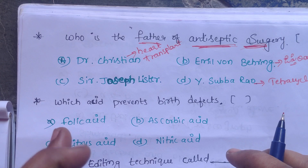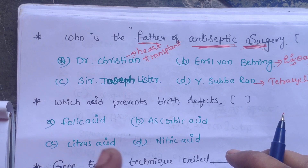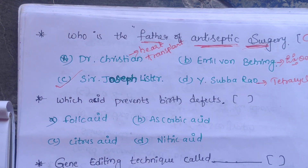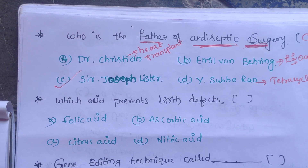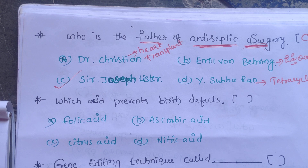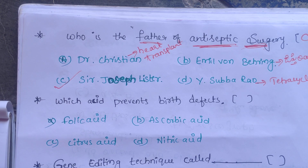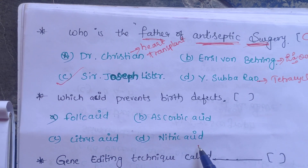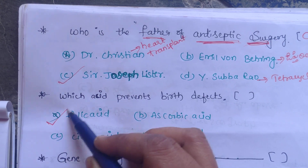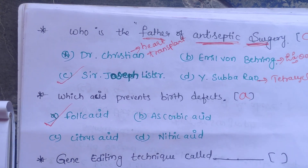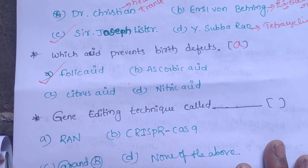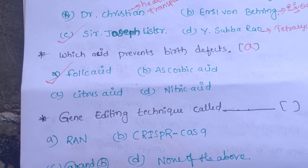Sir Joseph Lister is identified as the father of antiseptic surgery. So our correct answer is Option C. The next question: which acid prevents birth defects? A. Folic acid, B. Ascorbic acid, C. Citric acid, D. Nitric acid. Our correct answer is Option A, folic acid.